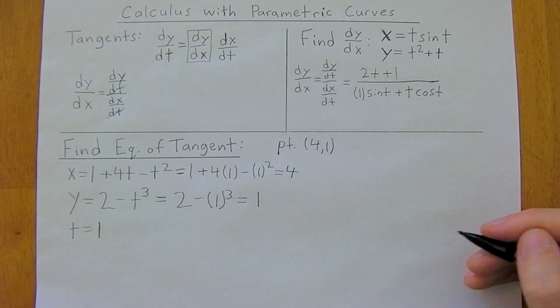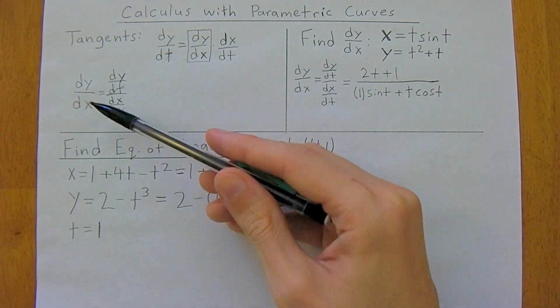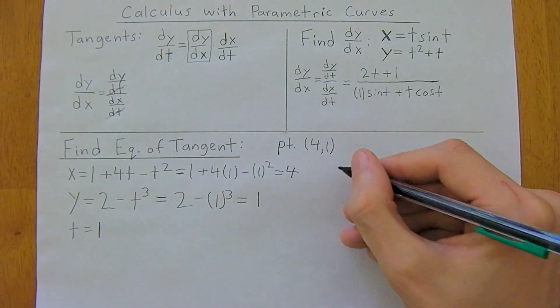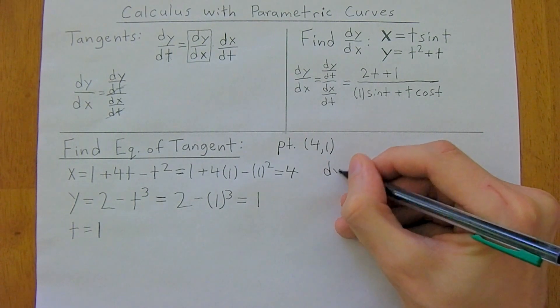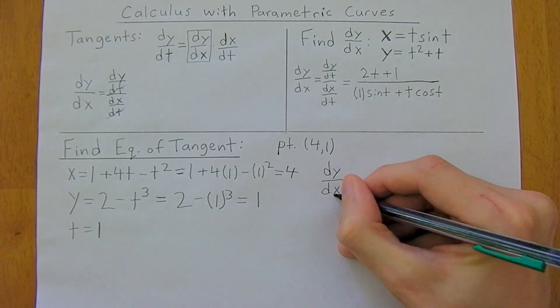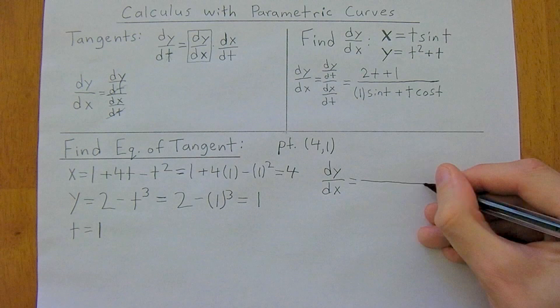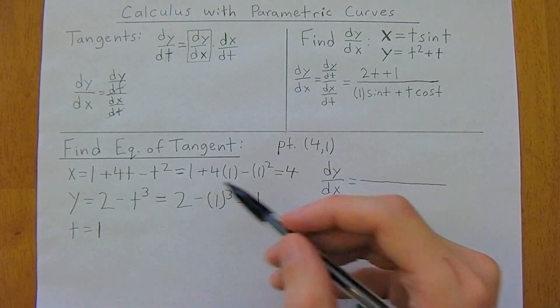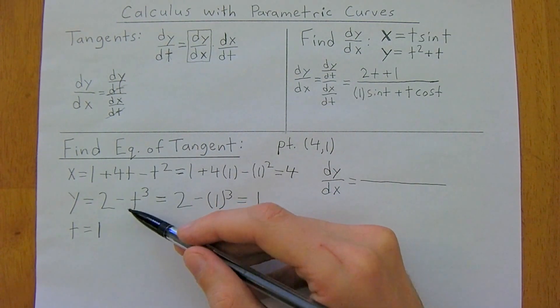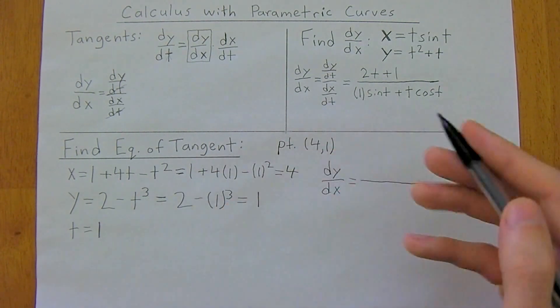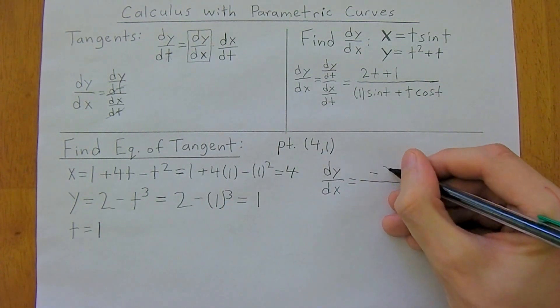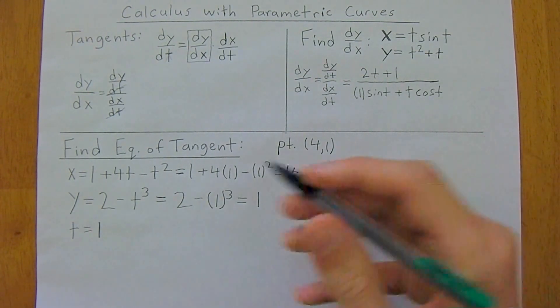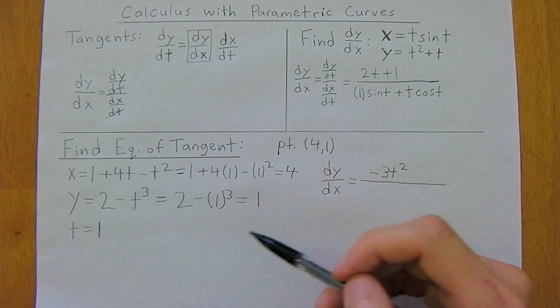Now we just need to take the derivative. So dy over dx. So to do that, dy over dx is going to be equal to, well, the derivative of y is just going to be negative 3t squared. So negative 3t squared. The 2 is a constant, so it's just going to go away.